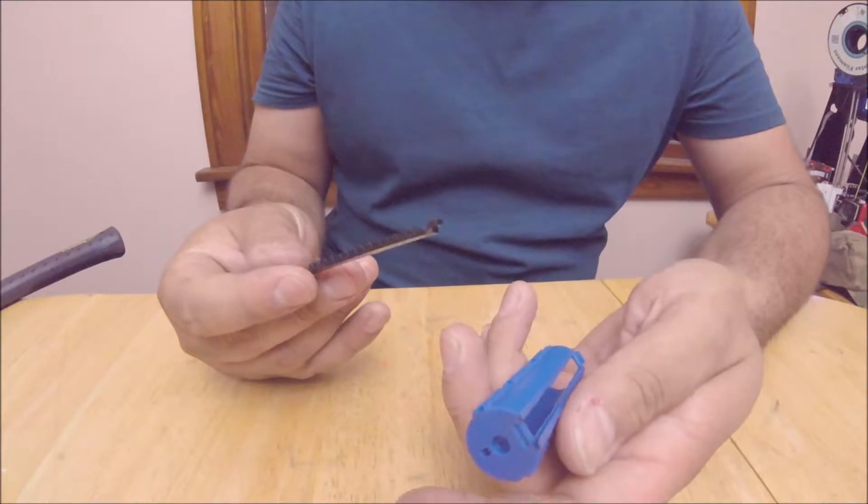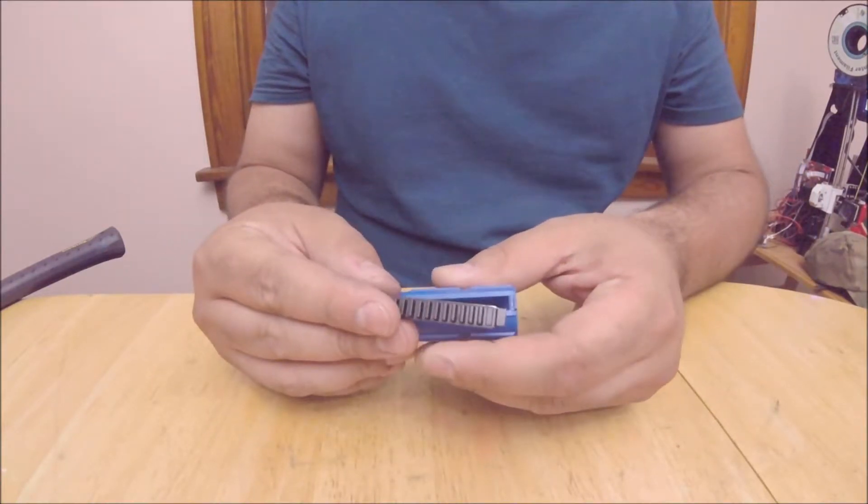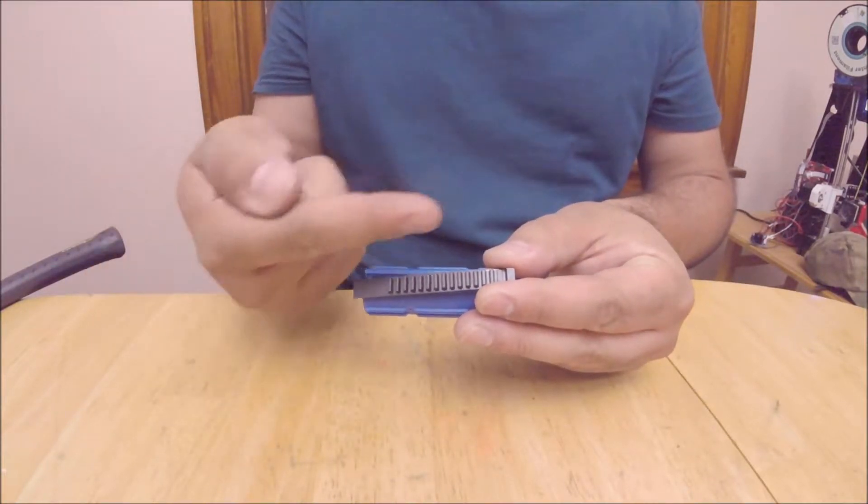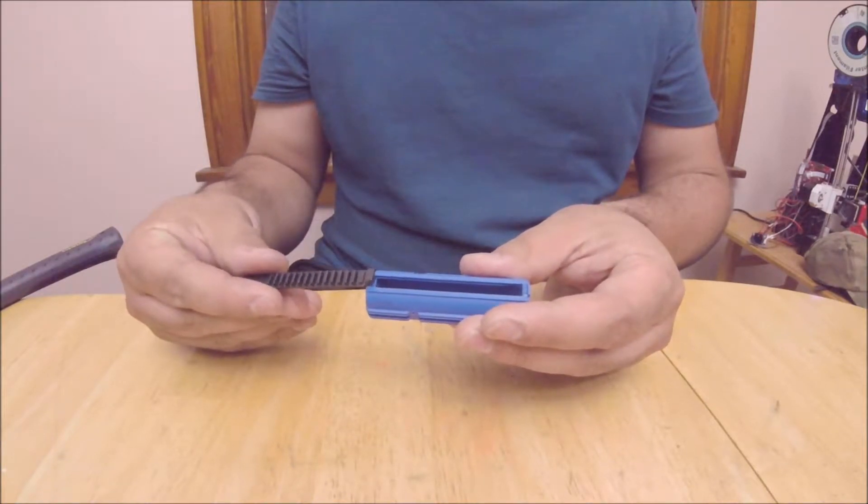You must epoxy the steel tooth rack in. These are only press fit. Myself and others have failed to do this before, and then we put it into a new build, and several shots later the steel tooth rack shoots right through the back of the piston.